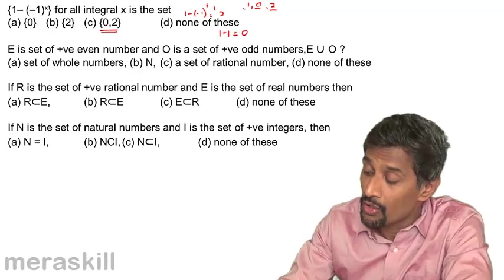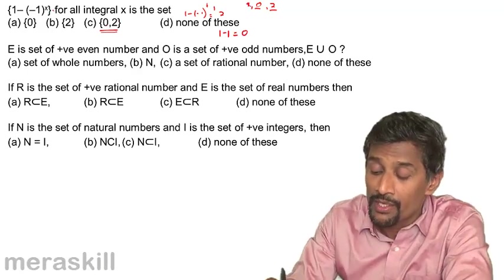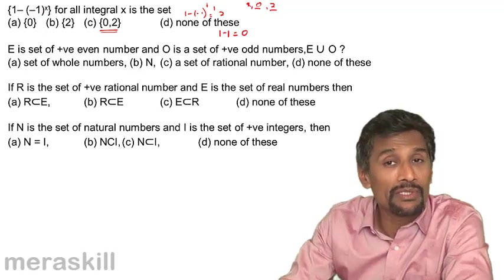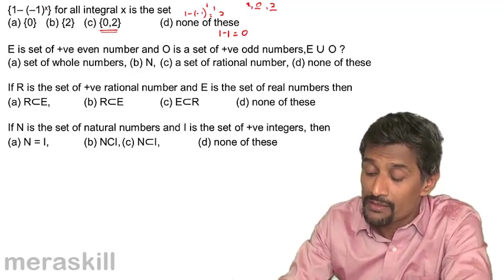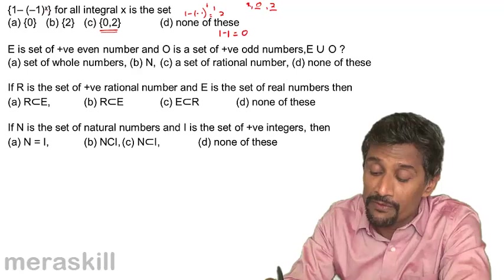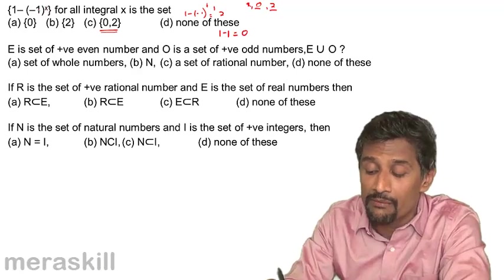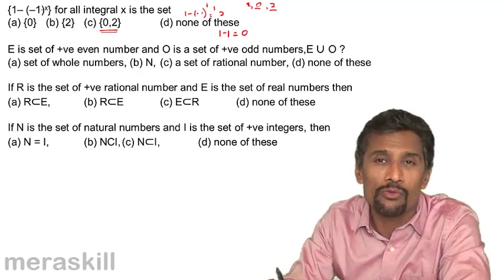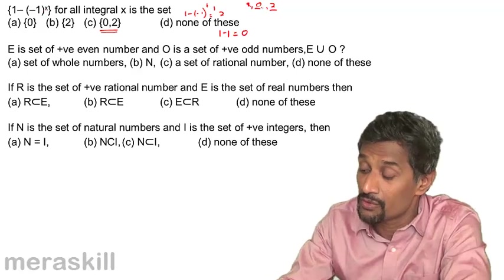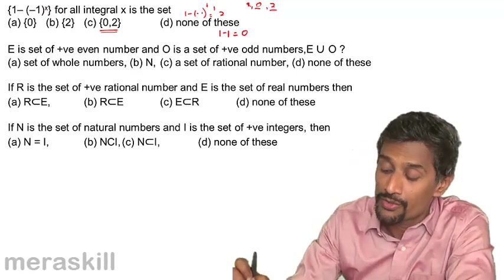For all integral x, the set could be either 0 or 2, not 1. Integral numbers means it could be 0 or 2. Even if x is 0, it becomes (-1)^0 = 1, so 1 - 1 = 0. So the answer is {0, 2}.